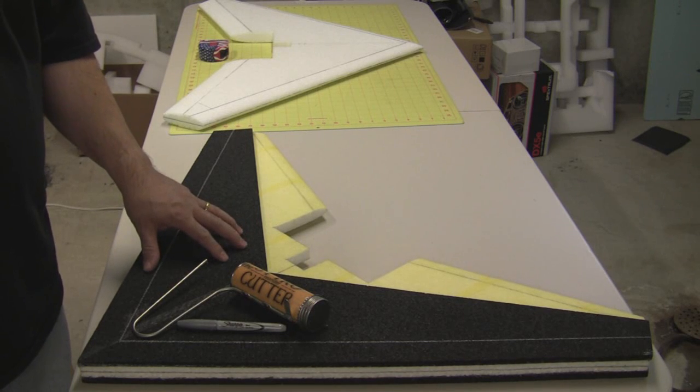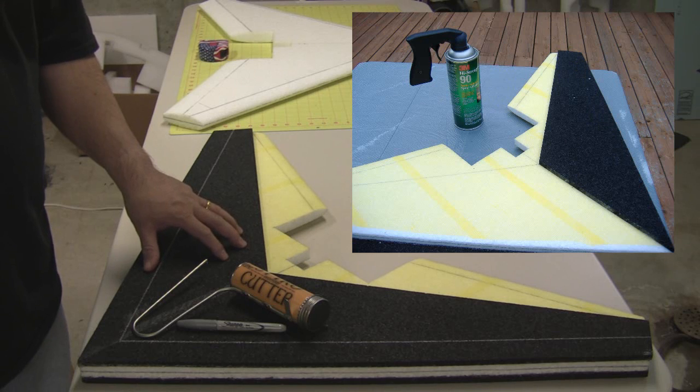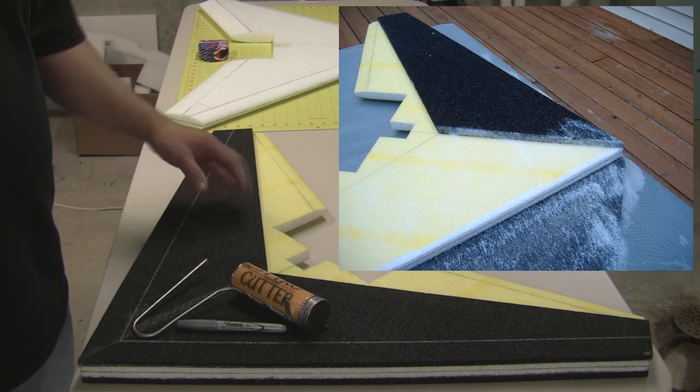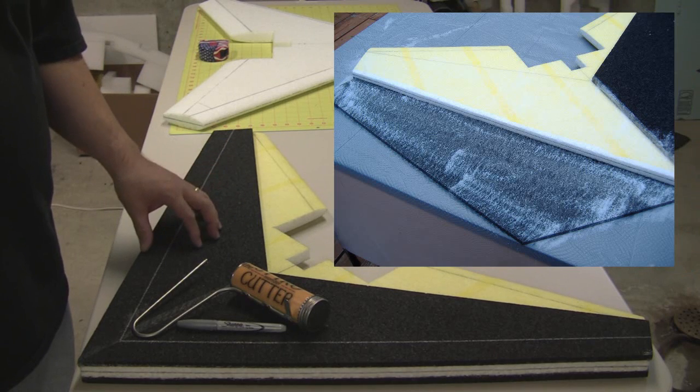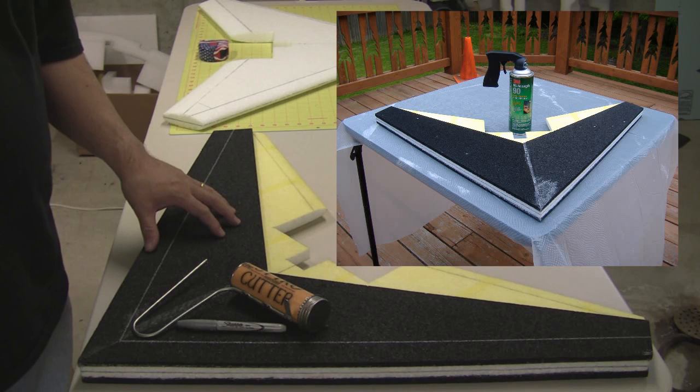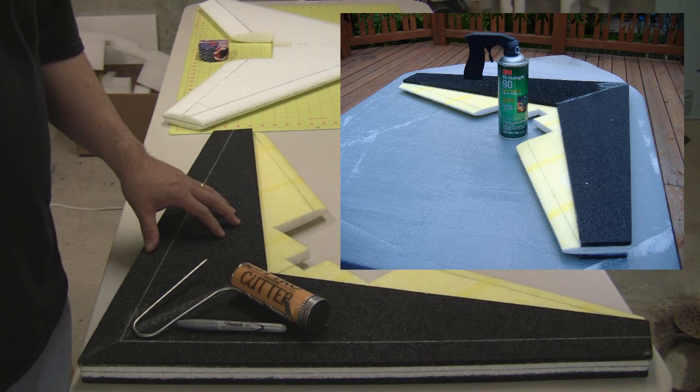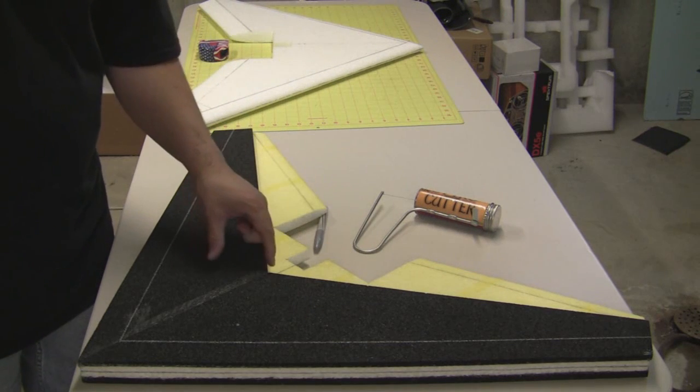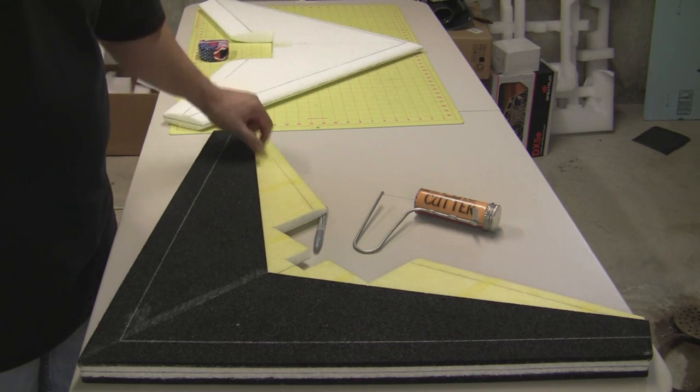Basically, I just use the 3M90 glue again and make sure that you spray both sides—the wing and the bottom of the KF airfoil—before you glue it on there. Let it sit for about a minute or two before you attach them.